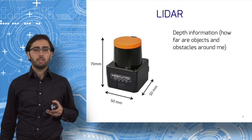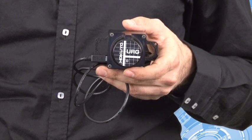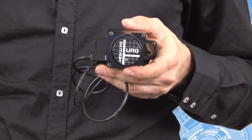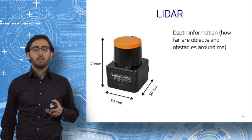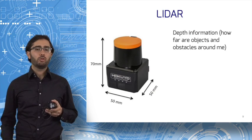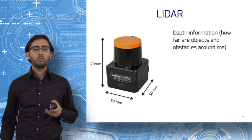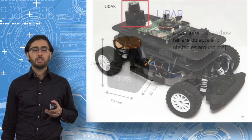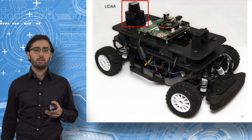Next up is the LIDAR. Depending on whom you ask, LIDAR stands for either light radar or light detection and ranging. A LIDAR provides depth or distance information. How far away from the car are the objects in the scene? A LIDAR is typically placed on top of the car to have an unobstructed view of the scene.